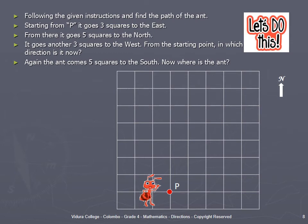Children, can you tell me from the starting point in which direction is it now? Now again, the end comes five squares to the south. Now, where is the end?